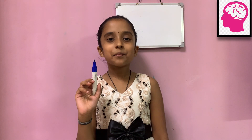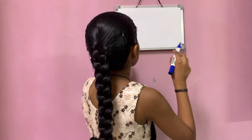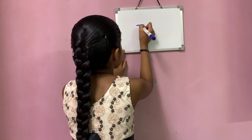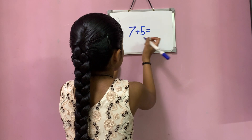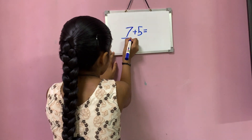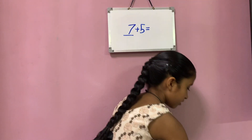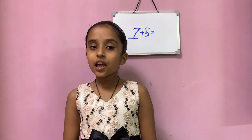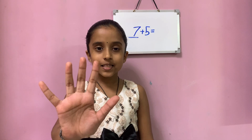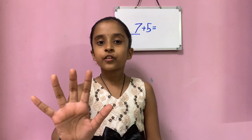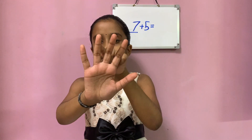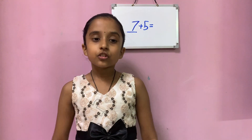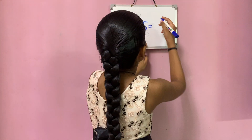Now let's see the mind method. So here I am writing seven plus five equals. Seven is the big number. Keep the big number seven in your mind and the small number five in your hands. Now let's forward count from seven: eight, nine, ten, eleven and twelve. So the answer is twelve.